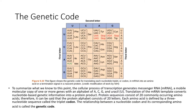Protein sequences consist of 20 commonly occurring amino acids. Therefore, it can be said that the protein alphabet consists of 20 letters. Each amino acid is defined by a three-nucleotide sequence called the triplet codon. The relationship between a nucleotide codon and its corresponding amino acid is called the genetic code.